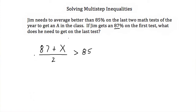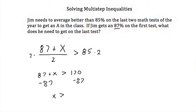The first thing I'm going to do is multiply both sides by 2. If we do that, the twos will cancel and we'll be left with 87 plus x on the left-hand side, and this has to be greater than 85 times 2, which is 170. Our next step will be to subtract 87 from both sides, and we'll get x needs to be greater than 83. Jim needs to score better than an 83 on his last test to get an A in the class. And that completes the tutorial on solving multi-step inequalities.